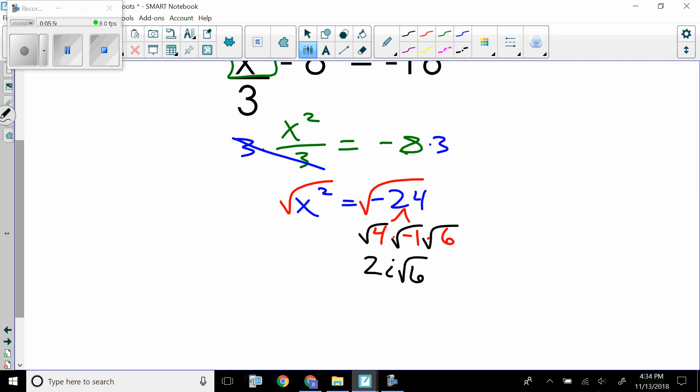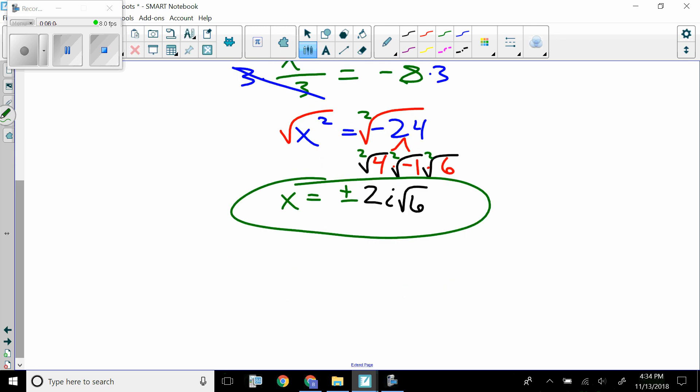You draw your individual radicals over it. The square root of 4 would be 2. The square root of negative 1 is i. And the square root of 6 is the square root of 6. I cannot forget, though, that there were twos hiding in here, meaning I needed a plus or minus here, and there are my answers.